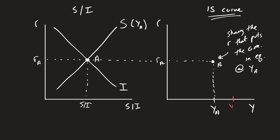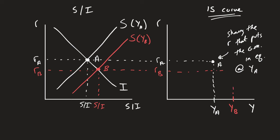What happens if we see a higher level of income — say y_b? If I have more income, I'm going to save more. We have this marginal propensity to save, meaning we save more when we have more income. So more savings is a shift to the right. This would be our savings function for y_b, giving us a different equilibrium point — r_b. This new single point on the IS curve is showing the real interest rate that puts the goods market in equilibrium, but now at y_b.